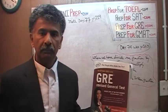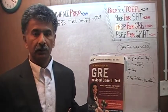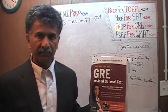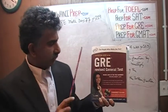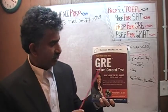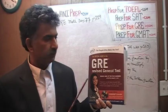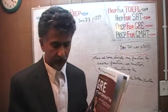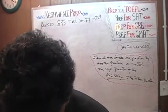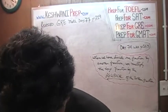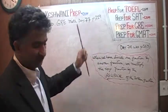We are here because we want to prepare for the GRE. We have been solving math problems out of this book here, the official guide to the GRE, the revised general test. If you do not own this book already, purchase one immediately — you are going to need it. The problem we are about to solve is on page number 219. Today is our lesson number 77.